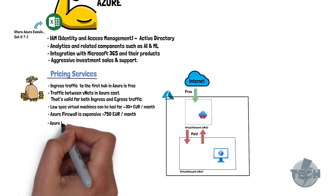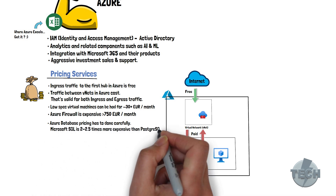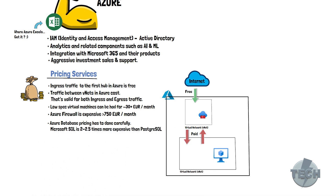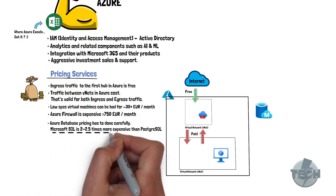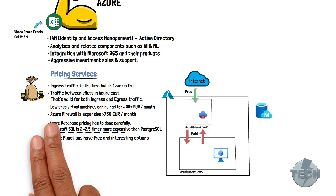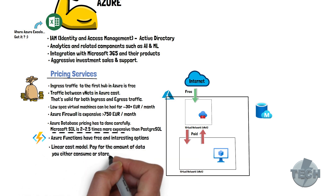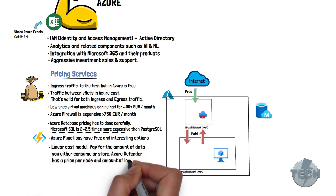Azure database pricing has to be done carefully — a lot of options to consider, a lot of possibilities. One key point I always stick with is that Microsoft SQL is about two to two and a half times more expensive than PostgreSQL. Azure Functions provide very interesting free options, specifically for non-critical workloads that you can leverage. Many components feature a linear cost model where you pay for the amount of data processing that you either use or store.